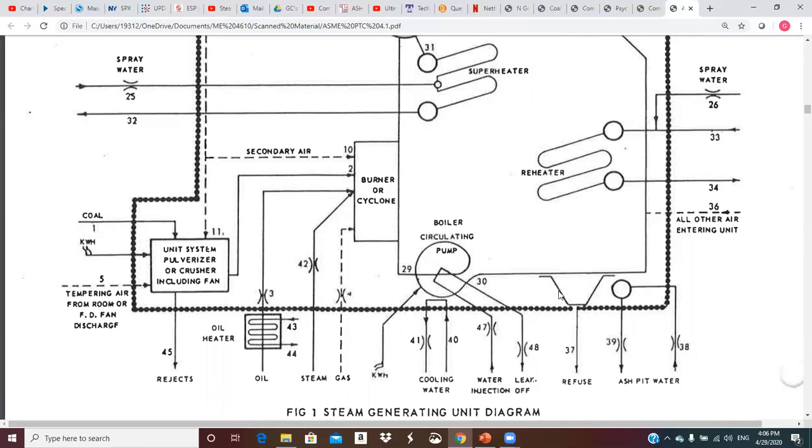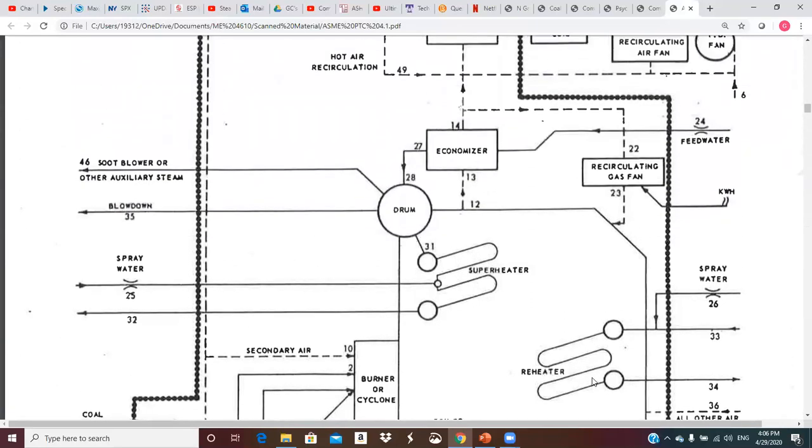We could have water injection and water leak off. So we could have some additional water coming in here. We might have dry refuse, clinkers and things falling down to the bottom of the boiler that are being taken out, mass flow. There's a certain amount of energy that leaves with them. Sometimes we circulate ash pit water down here, have some water down here to make sure we don't start a fire down in the bottom of the boiler.